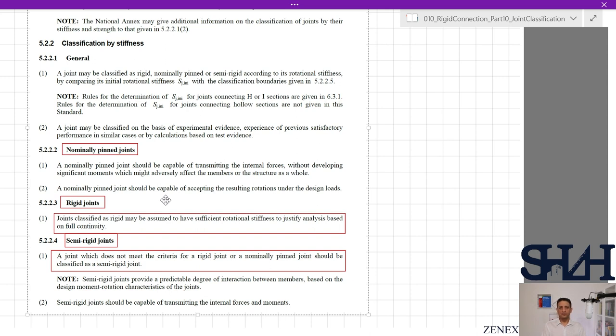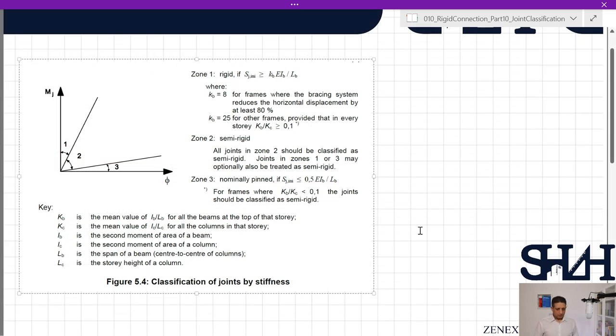So this is also the same after having a certain amount of stiffness the behavior can be assumed completely rigid. In Figure 5.4, you can see three zones. We have zone number one, two, three.